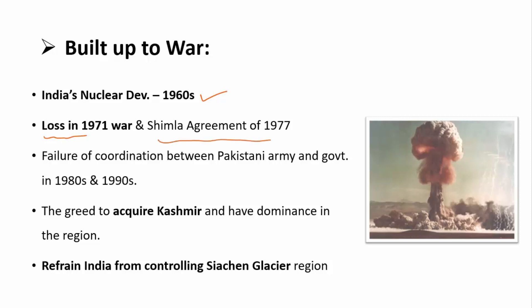Further, there was the Shimla Agreement, which decided that the Line of Control would be a fixed line. After that, there was no further territorial acquisition by Pakistan. The plan of attack on Kargil and regional influence over Kashmir had been developing early on. So in the 1980s and 1990s, the Pakistani army had a blueprint and proposed to act on it, and the government had promised to take action.